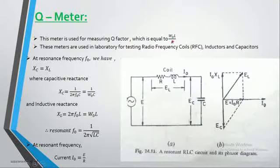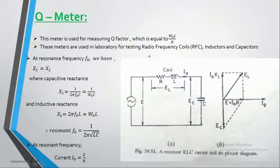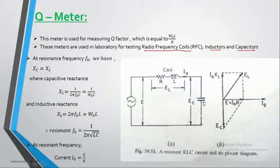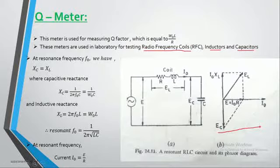The quality factor Q can be calculated using the formula Q = ω₀L/R, where we take the RLC resonant circuit. Q meters are especially used in the lab for testing radio frequency coils as well as inductors and capacitors. Based on the phasor diagram you can determine whether the component under test is inductive or capacitive in nature.